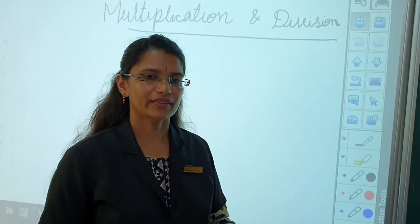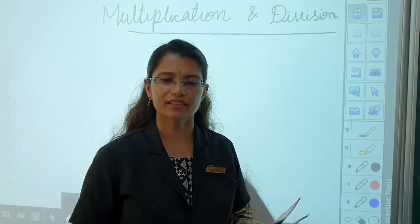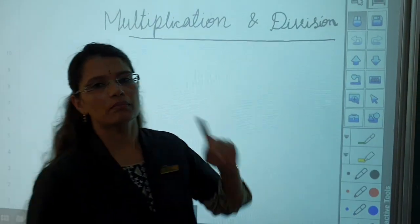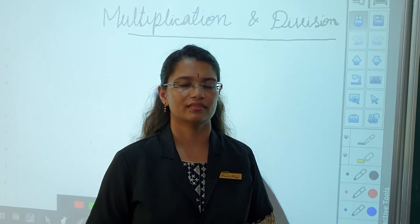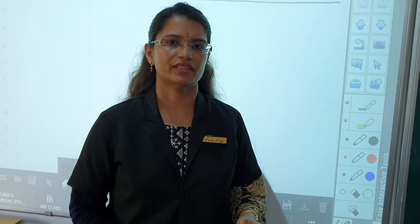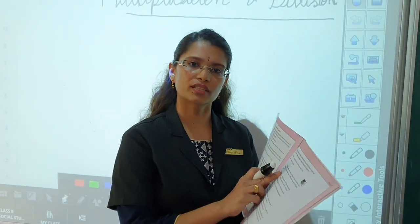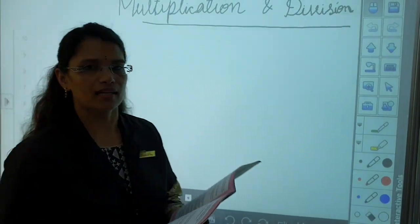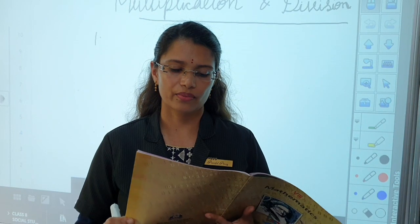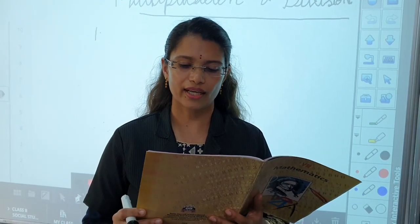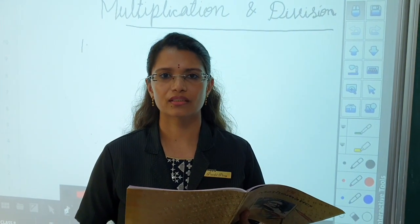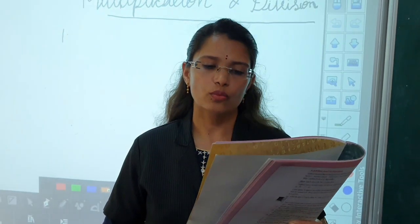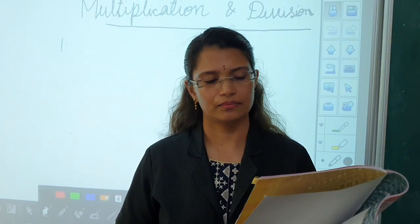Children, next topic is multiplication and division. What is multiplication? Multiplication is repeated addition. And what is division? Division is repeated subtraction. Now, let's see the first question. I will read out for you. In a company, the manager's salary is 5 times that of a peon. The manager gets 40,000 rupees a month. How much does a peon get a month?